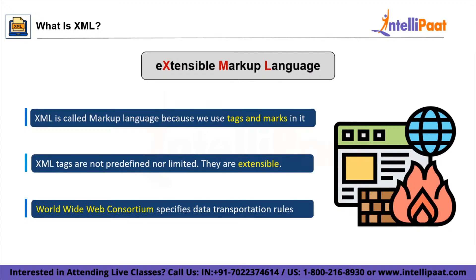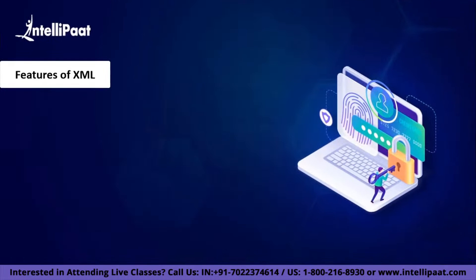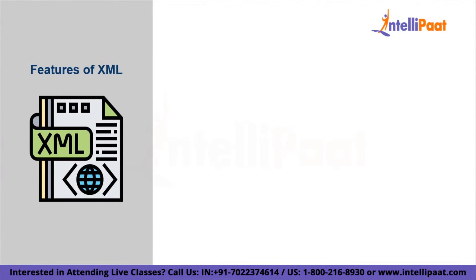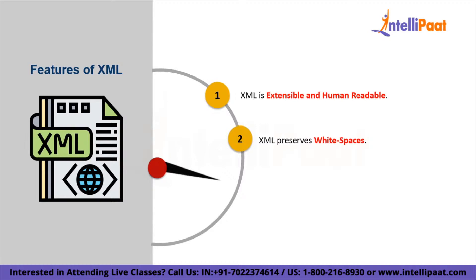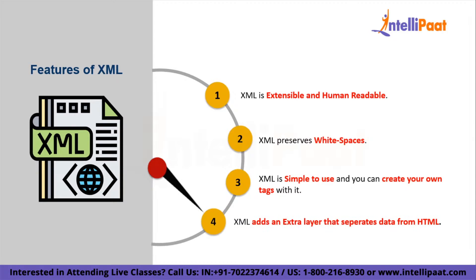The XML file is both human and machine readable. Now let's explore the features of XML. The first feature is that XML is extensible and human readable — it's not like assembly or machine language that you won't be able to read it. It's a format that both humans and machines can understand. Next, XML preserves white spaces, so inside a tag if you put extra spaces, all of them will be preserved. XML is increasingly simple to use as you can create tags yourself with no limitation. The implementation is easy since you can easily segregate data into different classes and types. The sole purpose of XML is to store and transport data, so it adds an extra layer that separates data from HTML. HTML is only responsible for presenting data, and XML will communicate that data with ease.